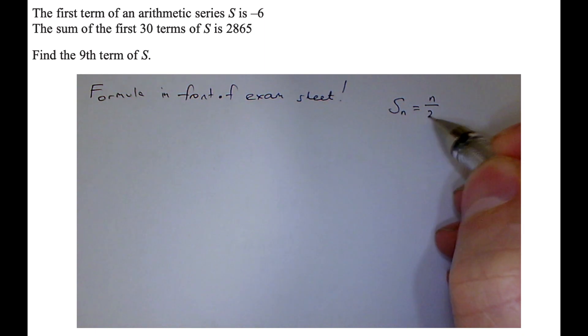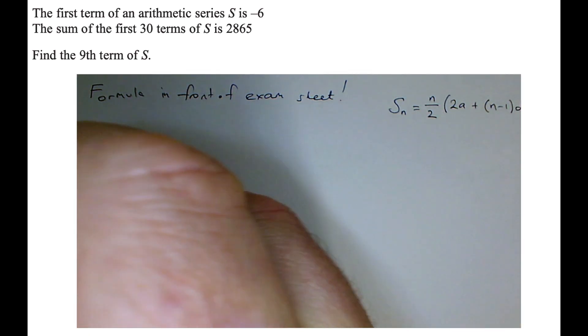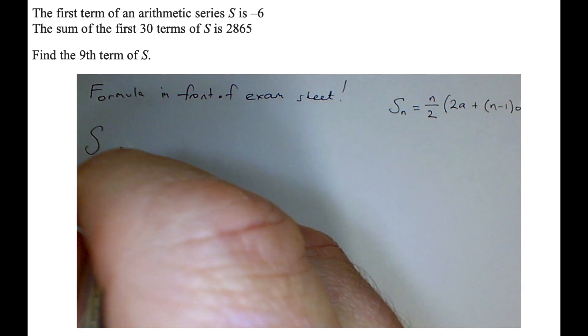So S stands for sum, N stands for the number of terms that we're going to be adding up, A is the first term, and D is what we're adding on to the term. So let's say we're going up in threes: 2, 5, 8, 11. That means that D would be equal to 3 because we're adding 3 each time.